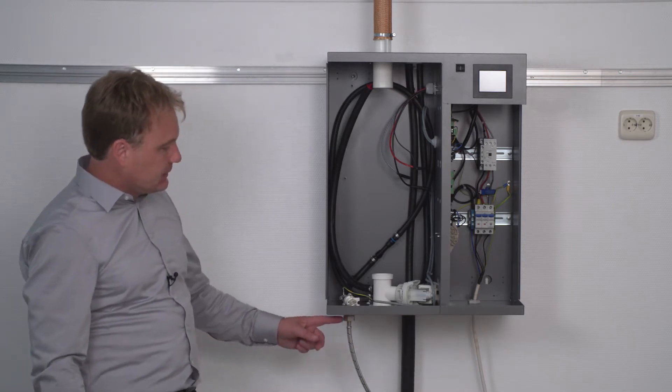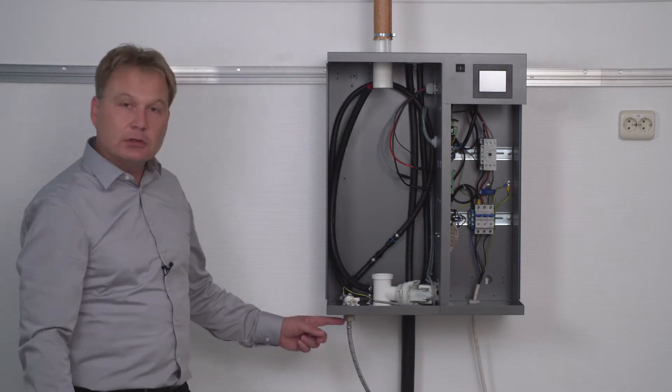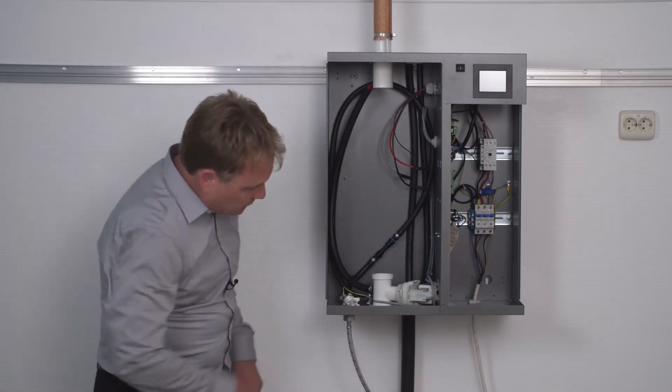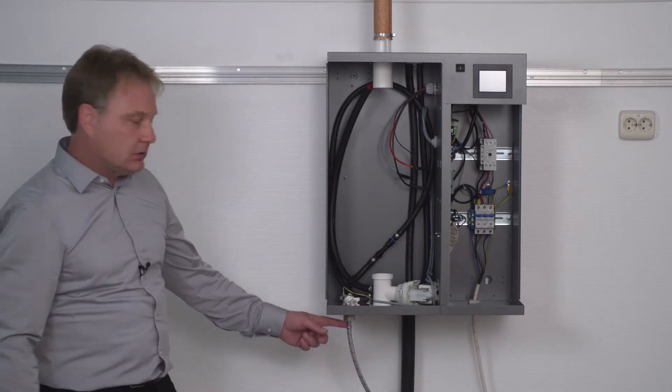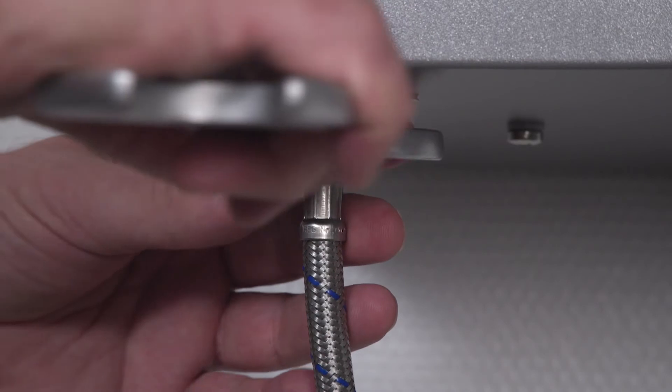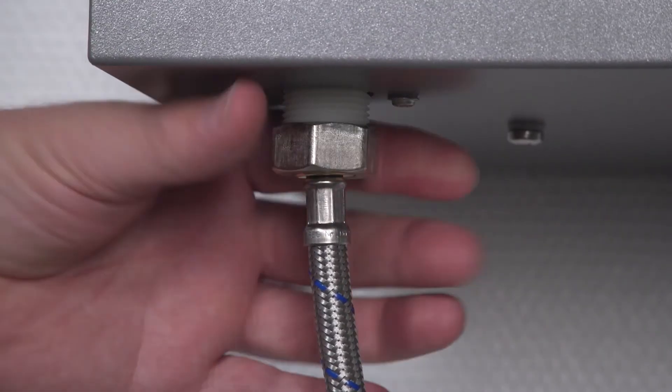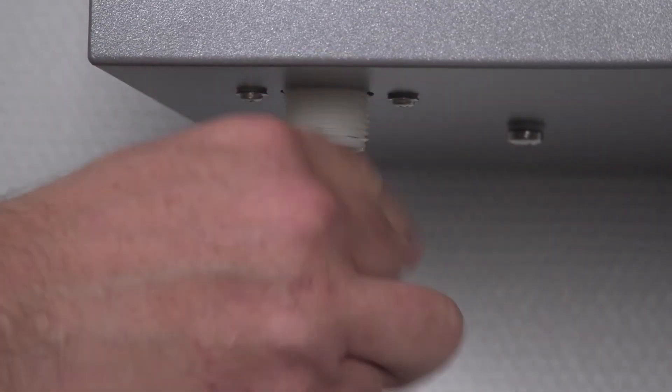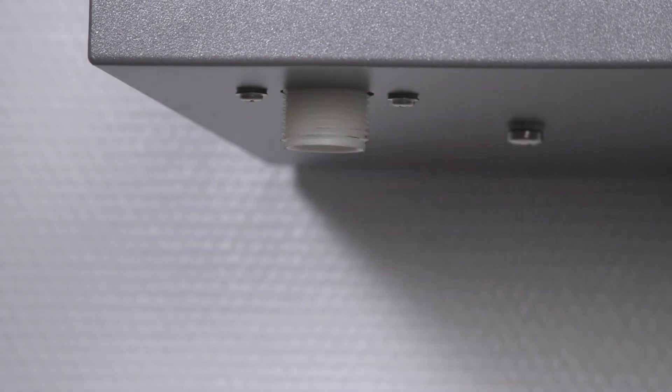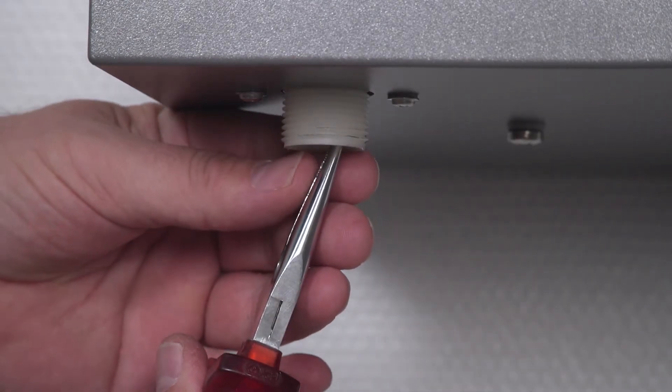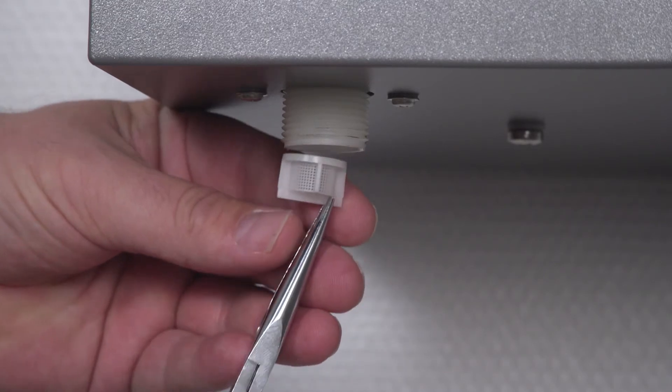Next, inspect the sieve at the tap water connection. Simply dismantle the water hose by loosening the nut and pull out the sieve with flat or pointed pliers. Clean the sieve under running water and then it can be reinserted.